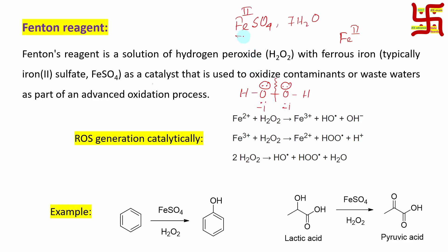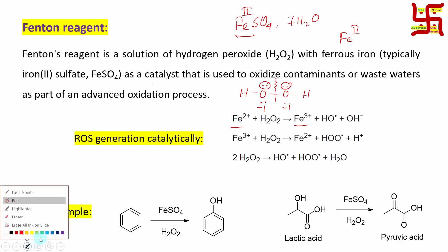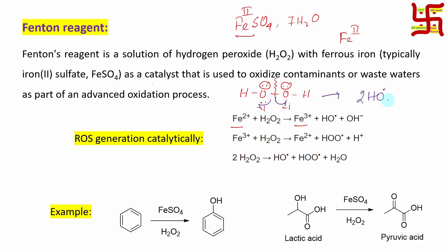From where does it accept the electron? Obviously from Fe2+, because Fe2+ releases one electron and itself gets oxidized to Fe3+. In this process, the released electron reduces and breaks this bond homolytically — that is, if you symmetrically break the covalent bond, you can expect half-electron movement indicated by a fish hook arrow. So if you provide one electron, one hydroxyl radical and one OH radical will be generated. Remember, these OH radicals are called ROS, or reactive oxygen species.